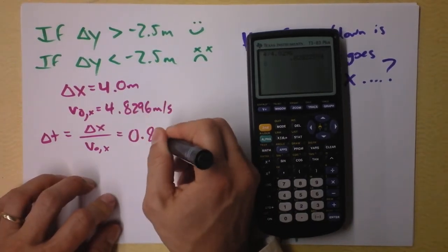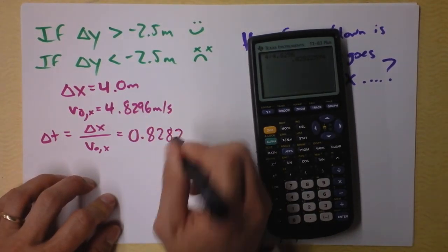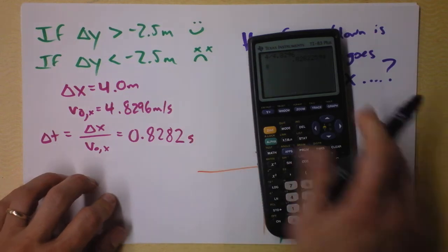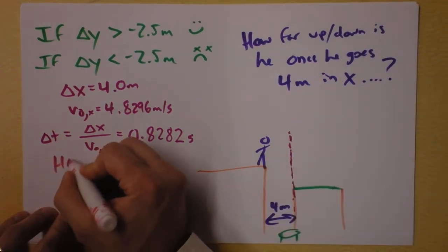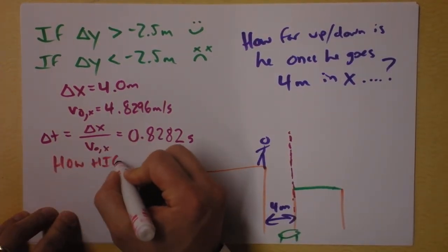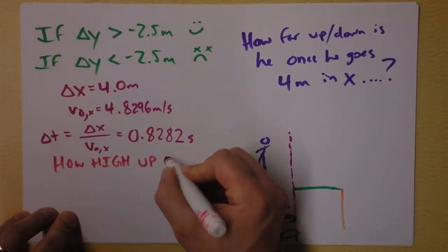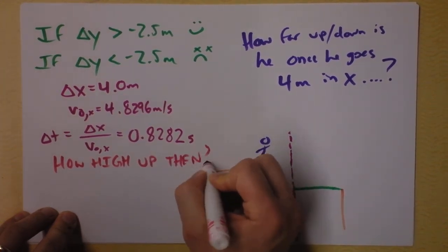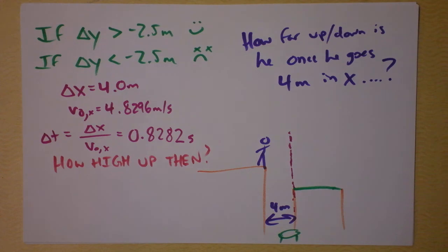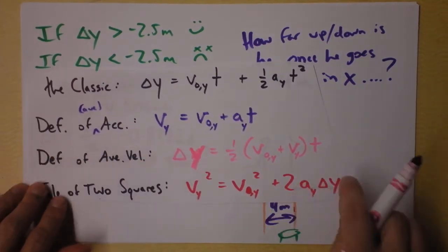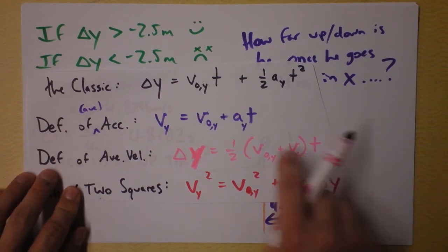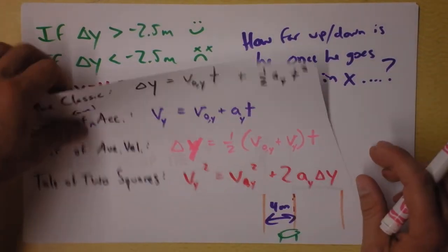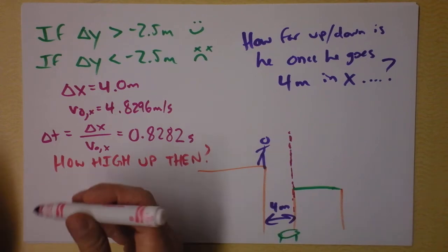It says 0.8282 seconds. That's how long it takes for Ben to get to this plane right here. And now I need to ask the question, how high up is he? So I'll do that. And the answer to the question, how high up is Ben Colleen, can be answered with this one, certainly, but we don't know Vy. This one, the classic. Right, let's go to the classic again, and I'm just going to plug in that time right there.